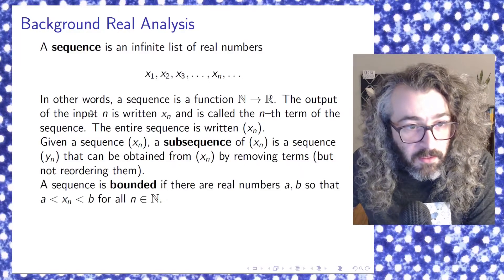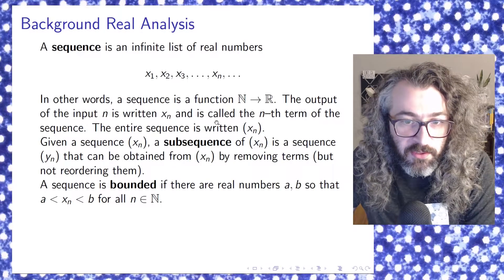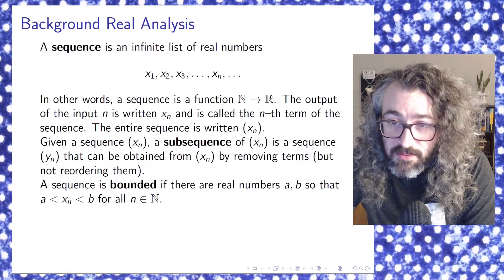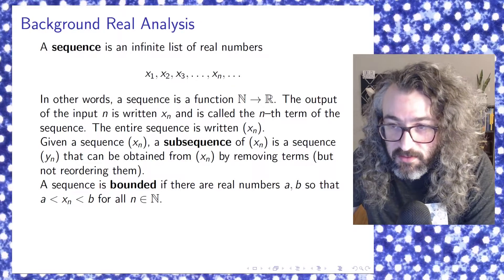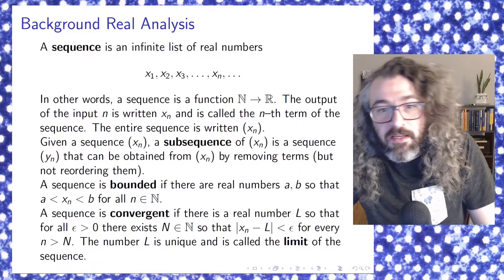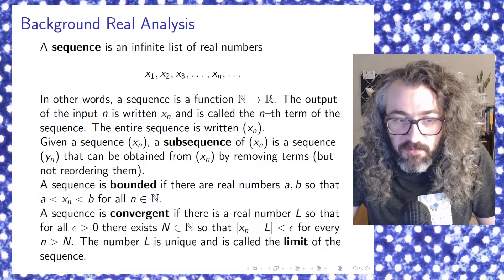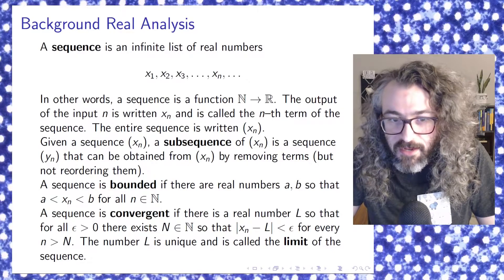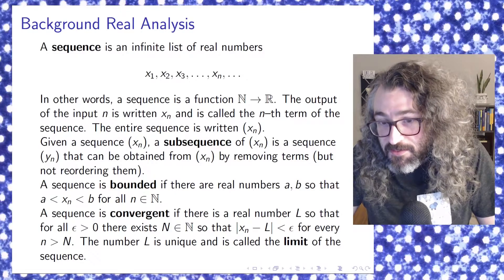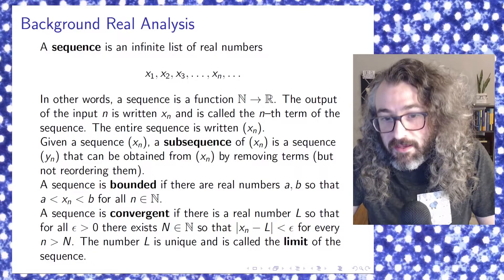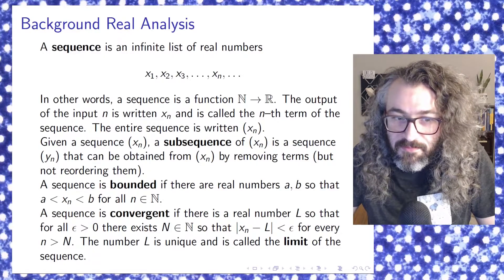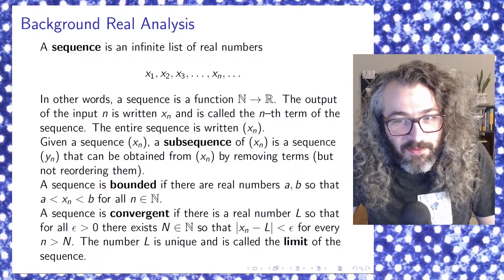A sequence is bounded if there are real numbers a and b so that everything in the sequence is bigger than a but smaller than b. And a sequence is convergent if there is a real number l so that for all epsilon greater than zero, there exists some natural number N so that the absolute value of x sub n minus l is less than epsilon for every little n bigger than big N. It's a mouthful. So the number l is unique, and it's called the limit of the sequence.